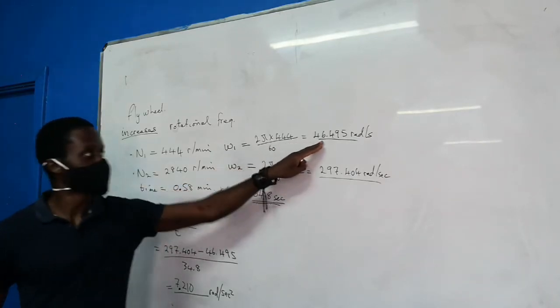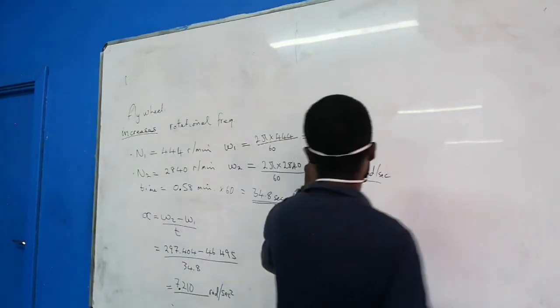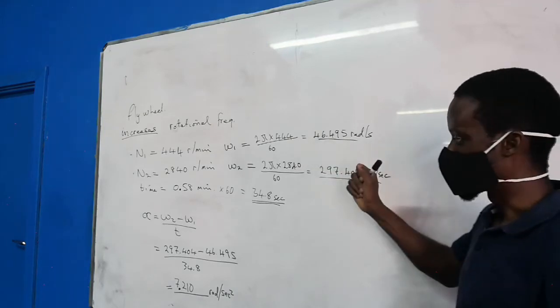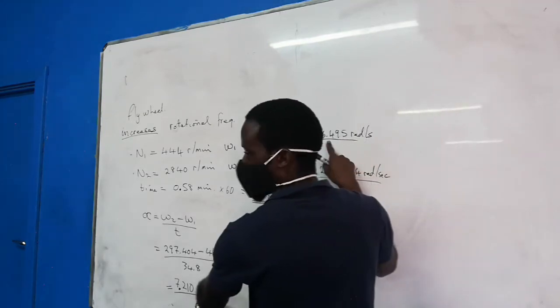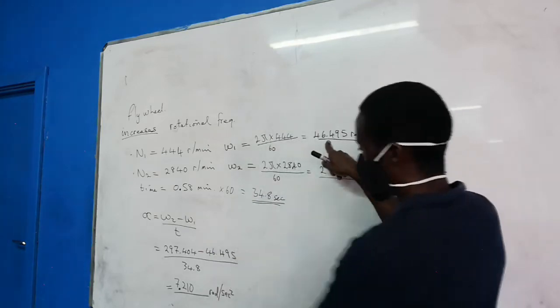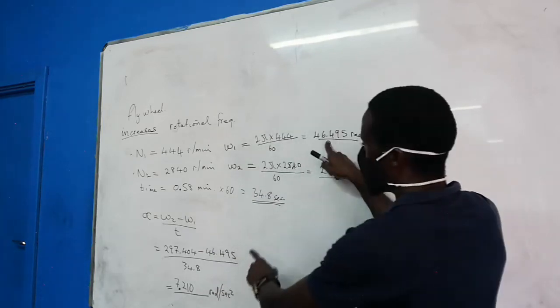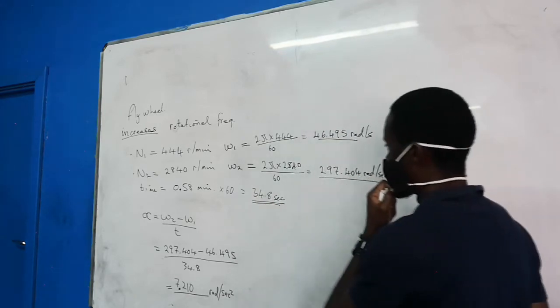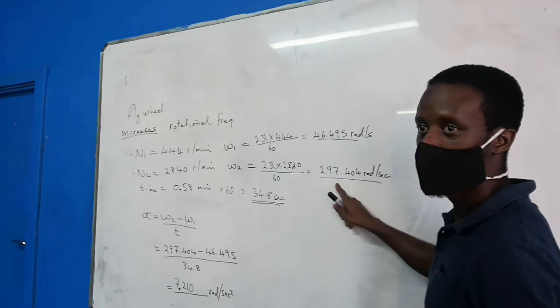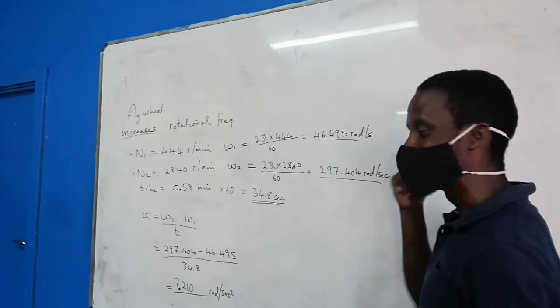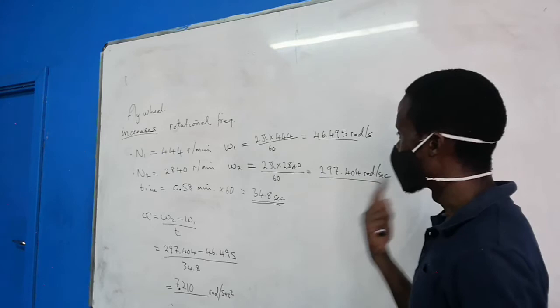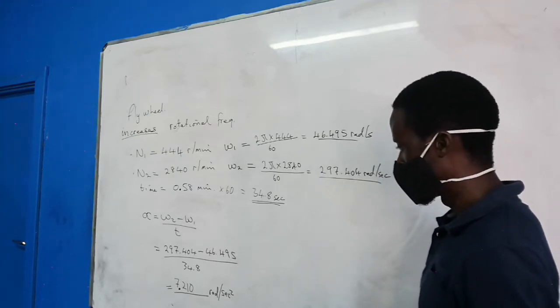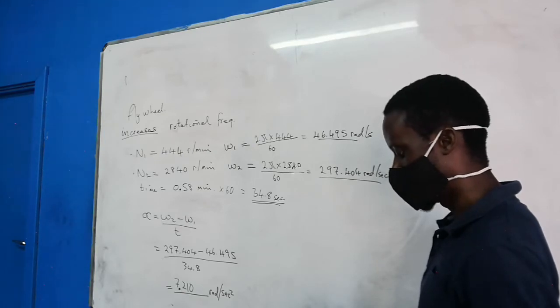Every second that went by, it was rotating at this 46.495. After one second, it has increased by this much. After another second, it has increased by that much. By the time 34.8 seconds finishes, we will reach this figure. It is increasing every second. Its speed of rotation is increasing.